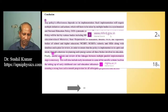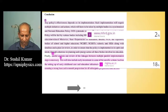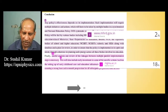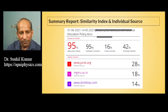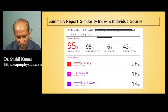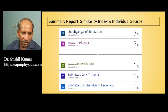In general, I use Turnitin to point out the similarity index and plagiarism. I don't completely rely on the software alone — when the software highlights some words in a paragraph or sentence, I check that particular thing manually. If you see this summary report, you can observe that the overall similarity index here is 95%.